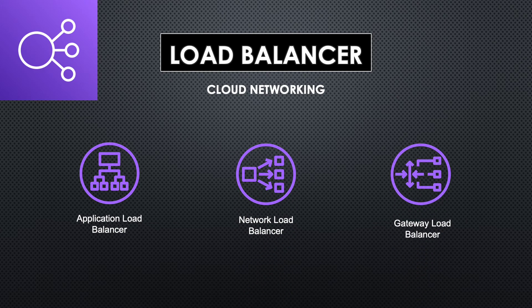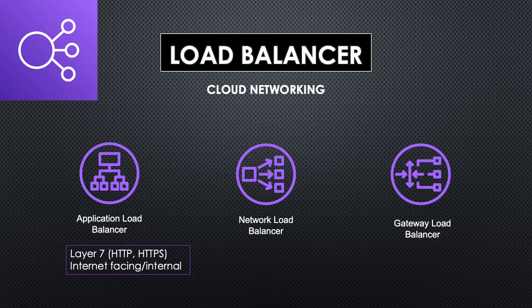Application Load Balancer is a layer seven load balancer. If you remember the OSI model of networking, it helps in load balancing layer seven traffic, which is HTTP and HTTPS traffic, and it has both internet-facing and internal options. That is, you can either set up to distribute the traffic from the internet or the traffic internally within a VPC.